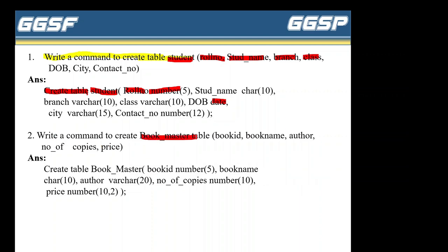Second example: write a command to create the Book Master table. CREATE TABLE book_master — in brackets: book_id with data type NUMBER; book_name — VARCHAR2 or VARCHAR; author — VARCHAR2; number_of_copies — NUMBER; price — NUMBER with precision and scale. Close bracket, semicolon. This is how we create the Book Master table.